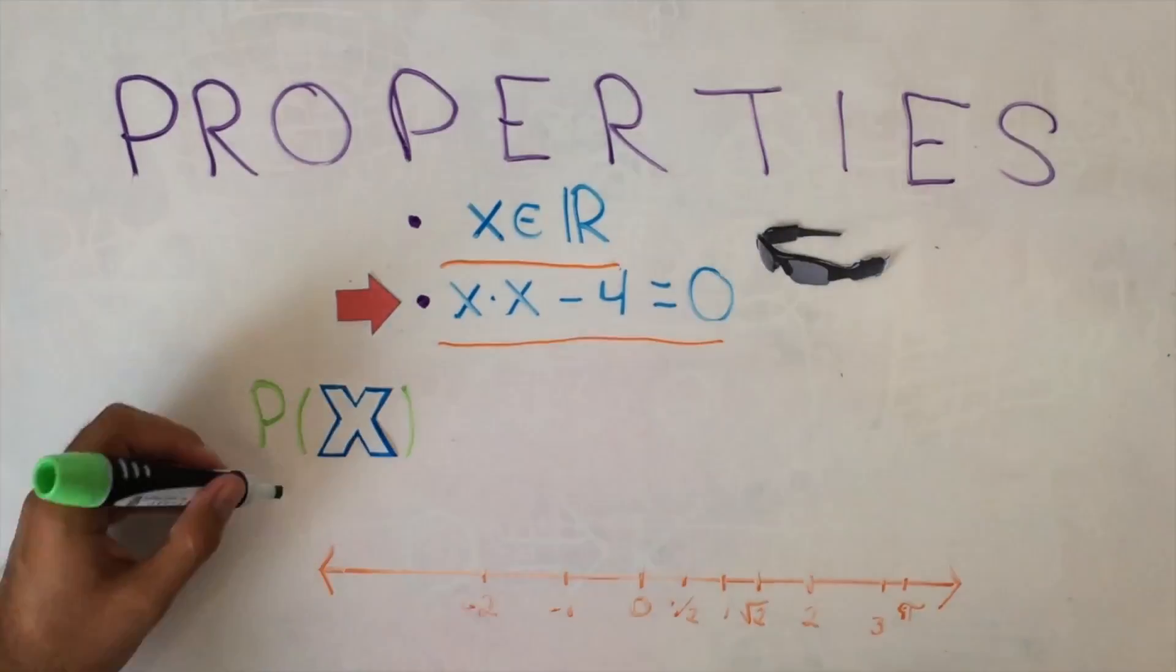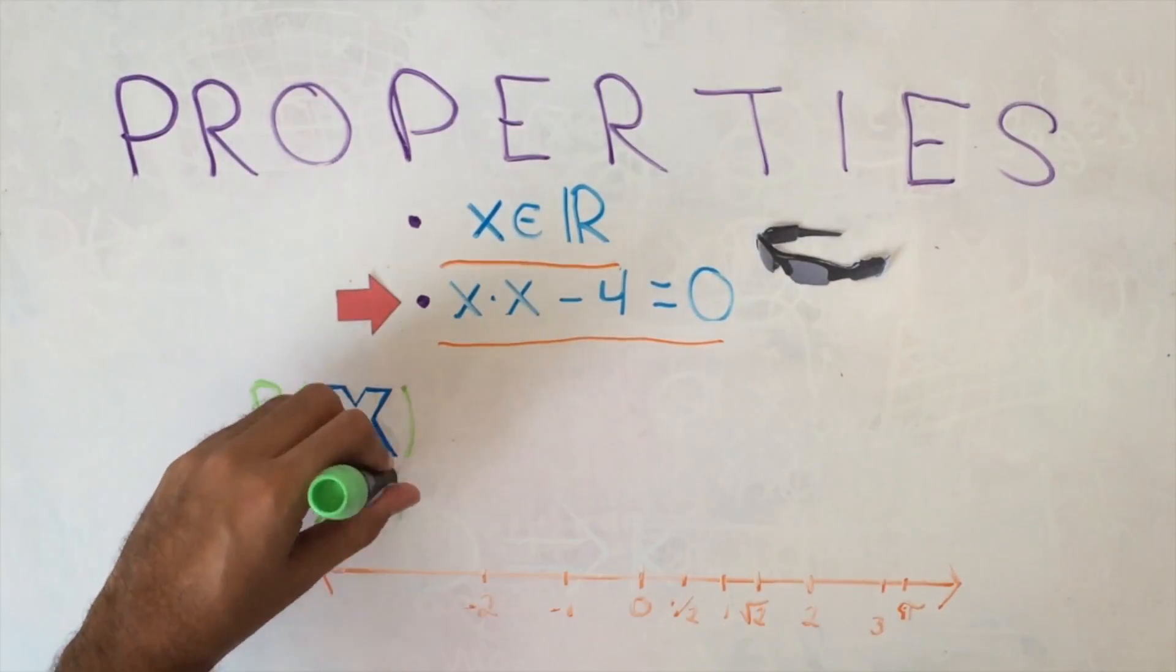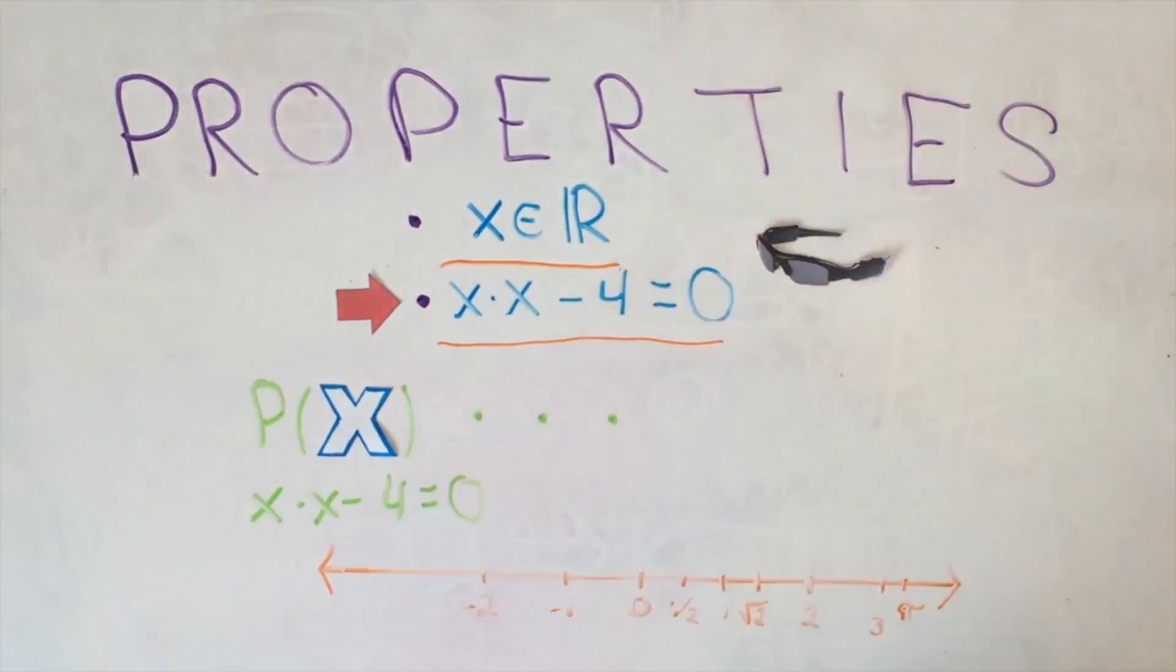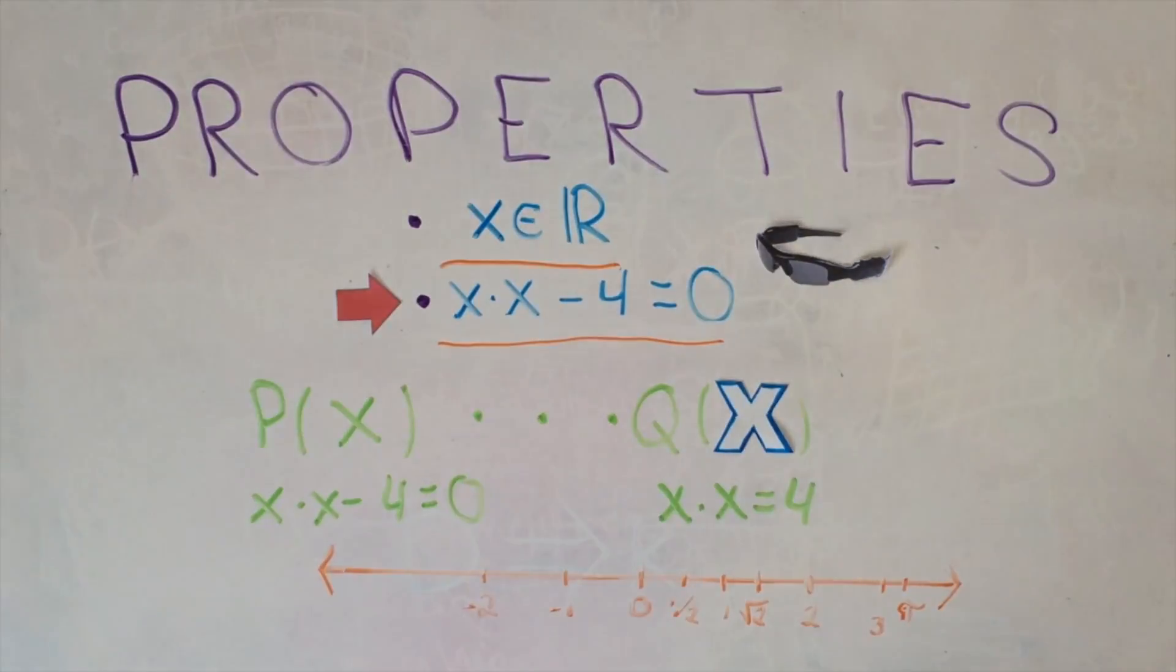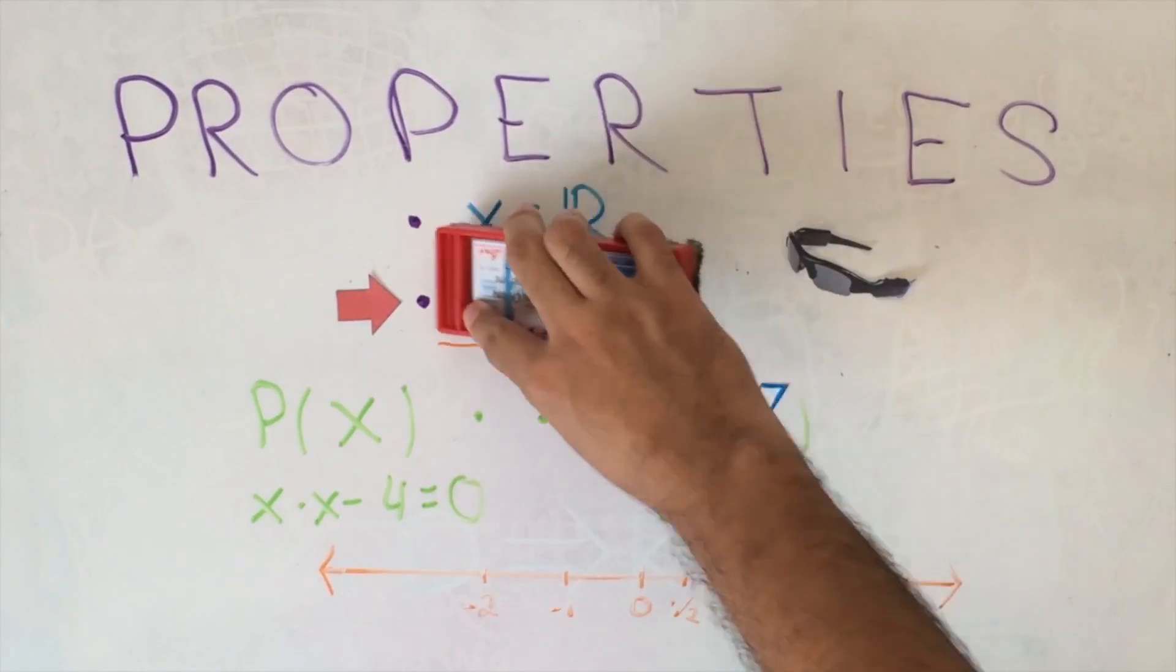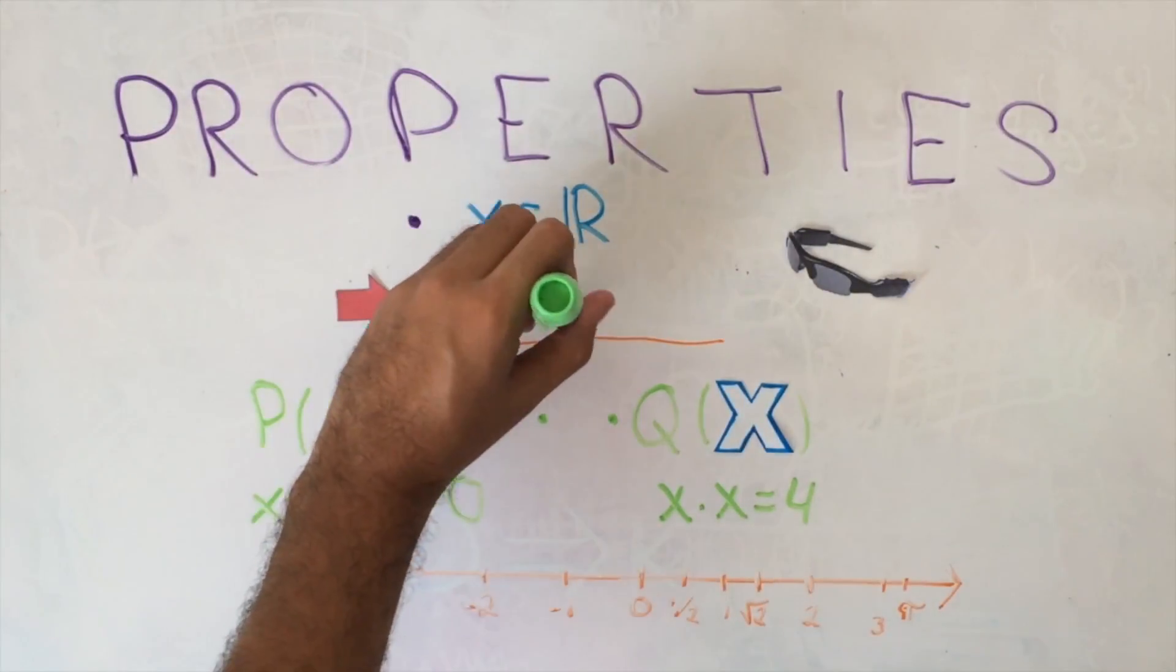Notice that if multiplying X by itself and taking 4 units from it gives you 0, then taking nothing from it, that is, just multiplying X by itself, gives you 4. In other words, we are looking for a number that multiplied by itself is equal to 4.